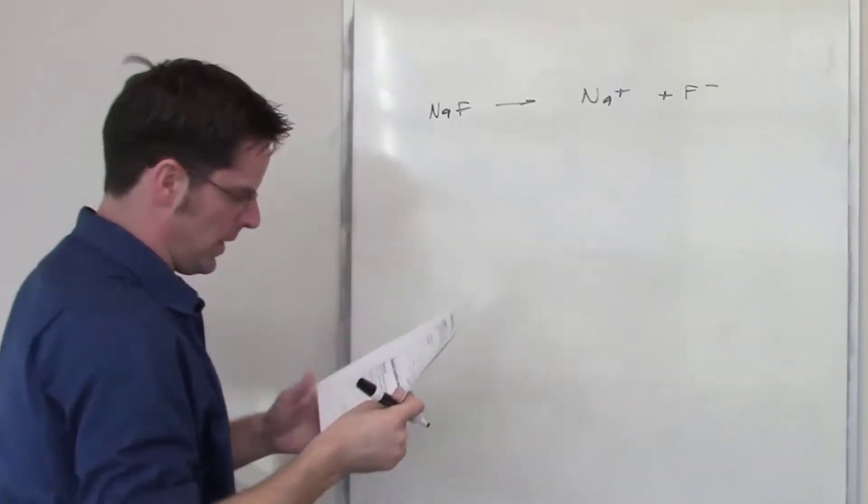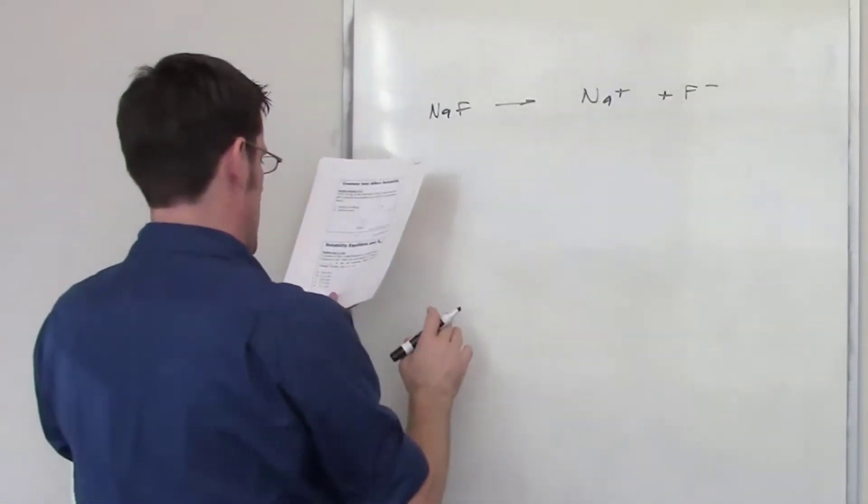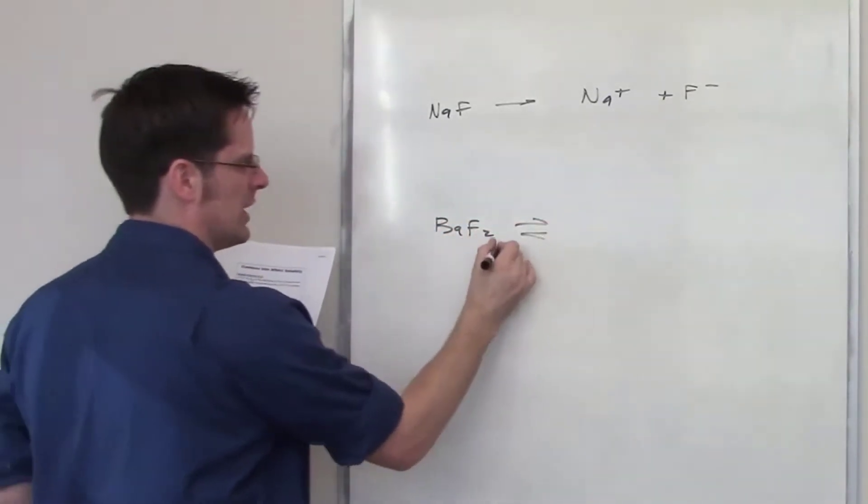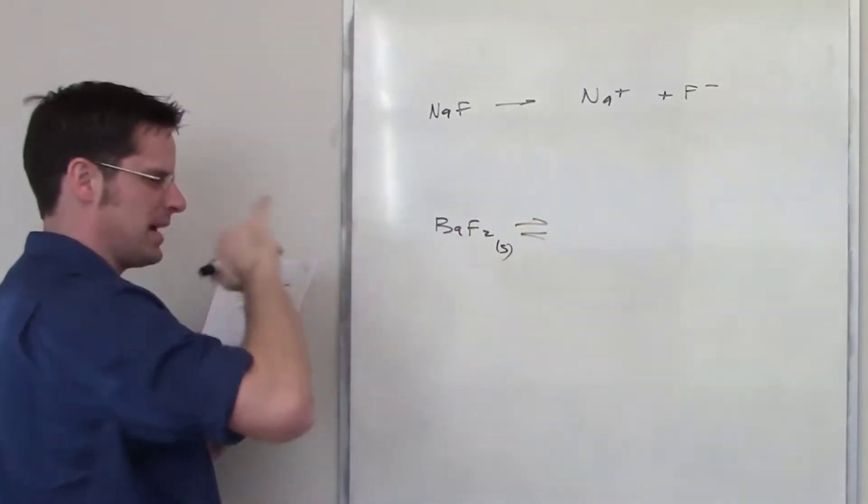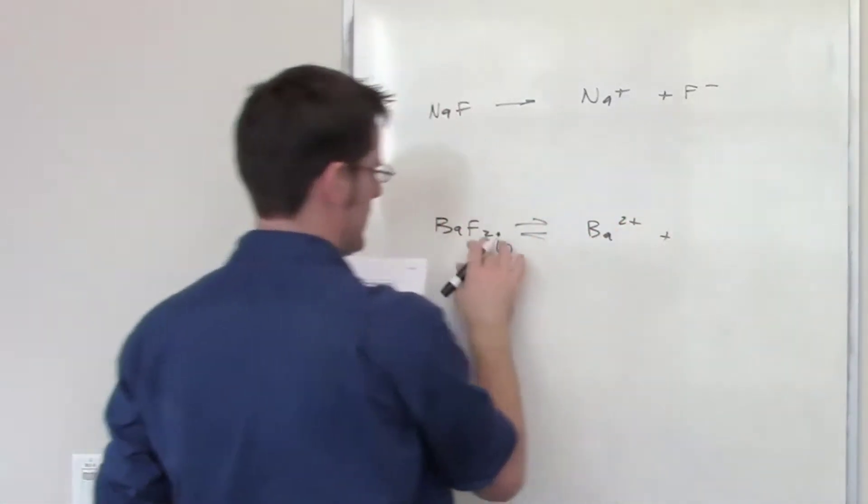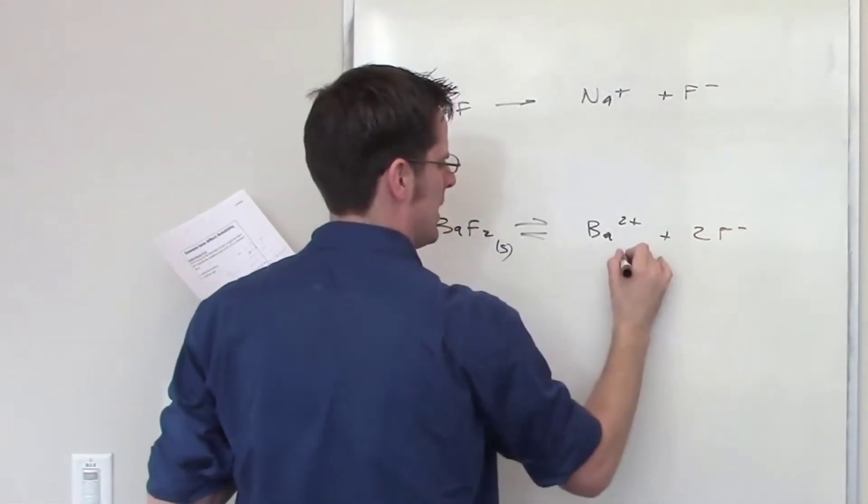I'm adding this dropwise to a solution that is of barium fluoride. So I've got barium fluoride. Barium fluoride is not a strong electrolyte, which means it dissociates roughly back and forth in an equilibrium way to yield barium cation and two molar equivalents of fluoride anion.